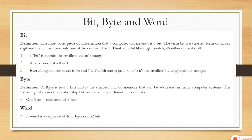One byte is a collection of 8 bits — it is the smallest unit of memory that can be addressed in any computer system. It shows the relationship between all the different units of data in the form of a combination of binary digits. A word is a sequence of 4 bytes, or 32 bits.